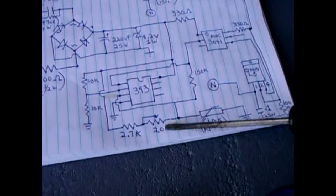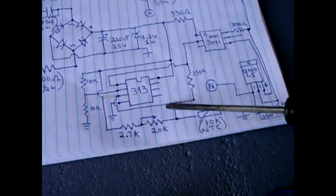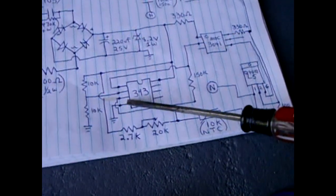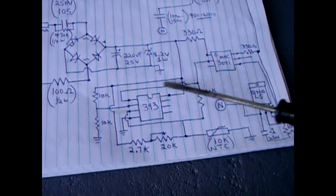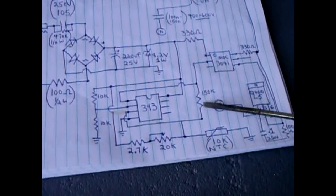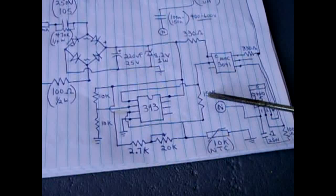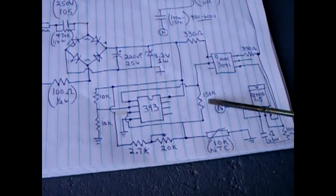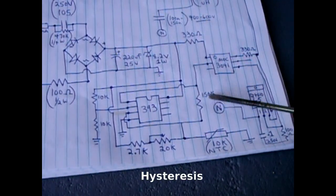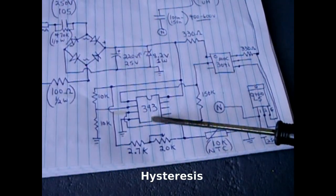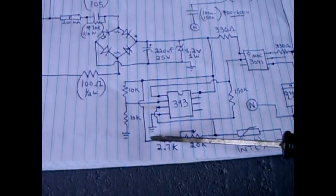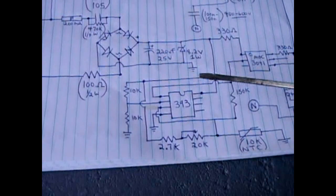At the junction of this thermistor and the potentiometer that goes into pin 3. Between pin 1 and pin 3 is a 150K resistor, and the purpose of this resistor is to help adjust the switching on and off states of this LM 393 integrated circuit. Pin 4 goes to ground.